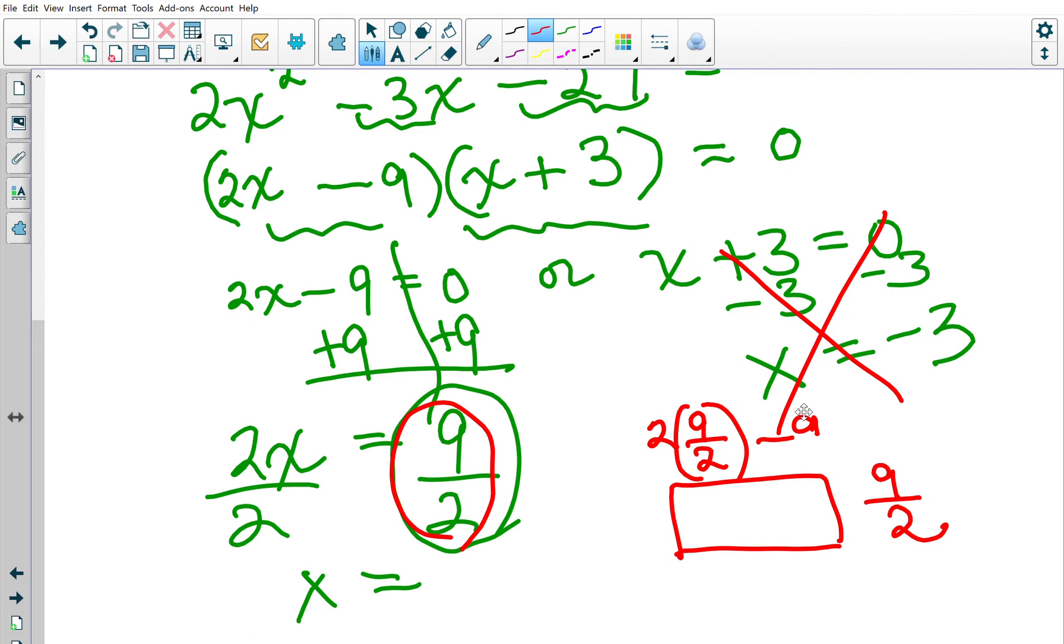So it's 2X minus 3. X is 9 halves, and then 2 times 9 halves is 9 minus 3 is 6, so 6 is my length and 9 halves is my width. If I multiply this together it equals 27.